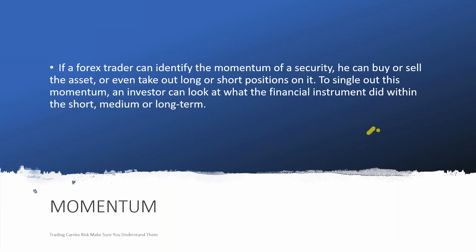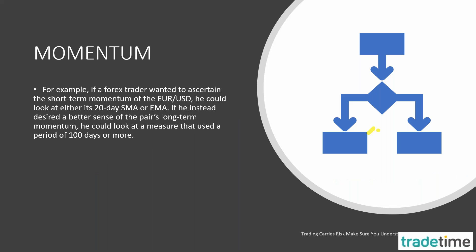One more use for moving averages is measuring the momentum of a given security — how quickly it is ascending or descending. Once an asset starts moving in a certain direction, it will keep moving that same way. Moving averages tell you whether an asset is in an uptrend or downtrend and the speed of that movement, just like trend lines. If a Forex trader can identify momentum, he can buy or sell and take long or short positions. For short-term momentum on the EUR/USD, look at a 20-period SMA or EMA; for long-term momentum, look at a 100-period SMA.